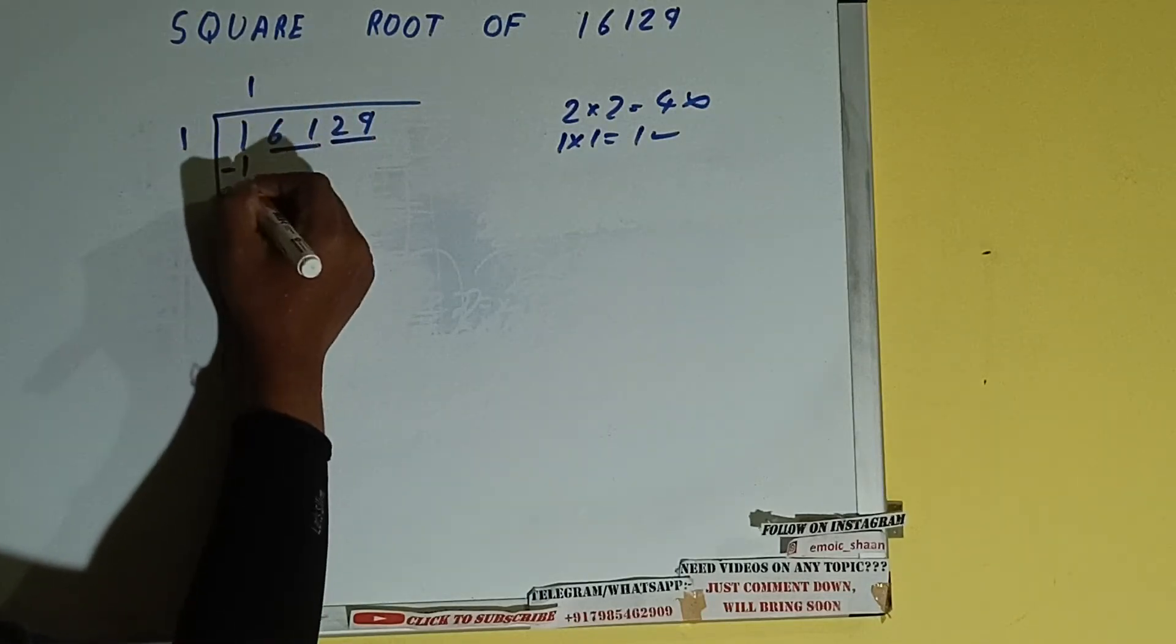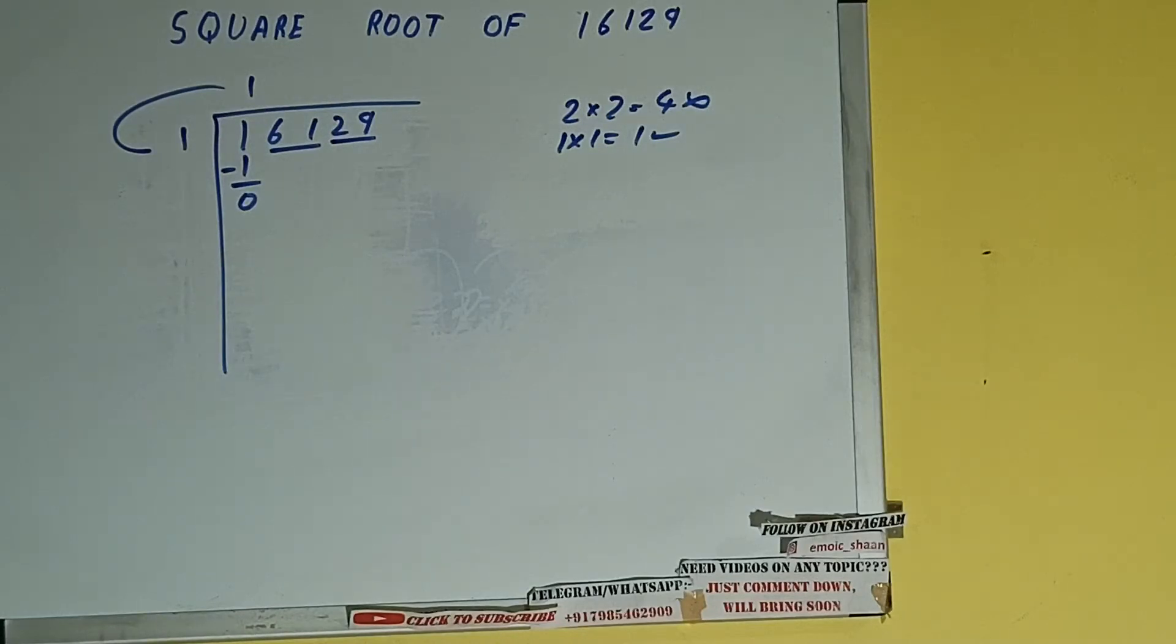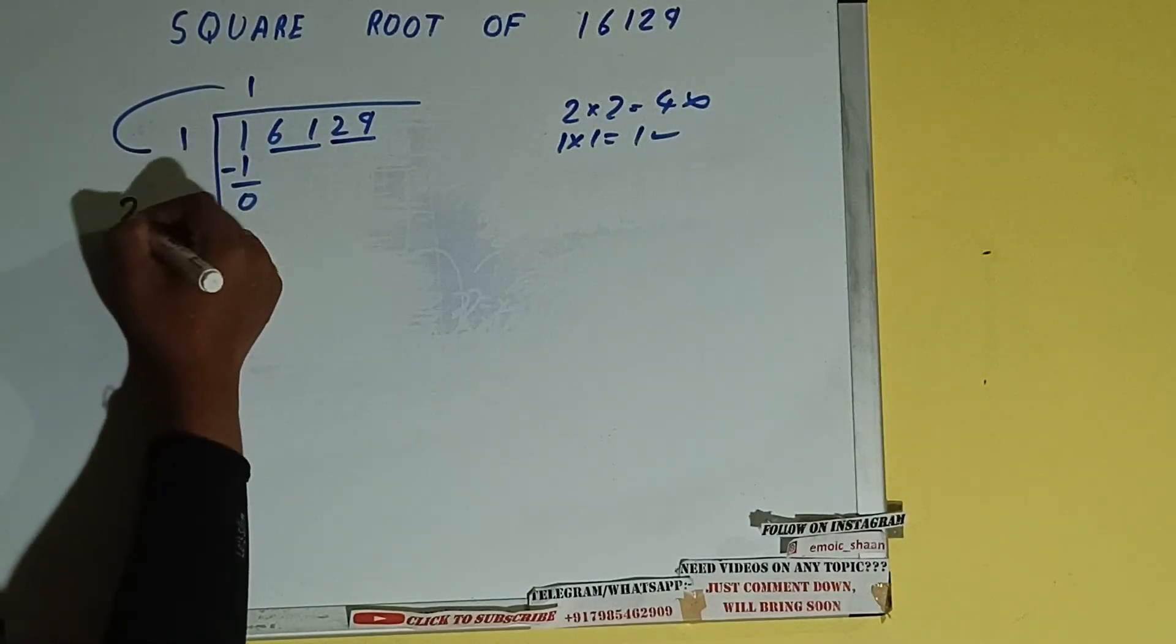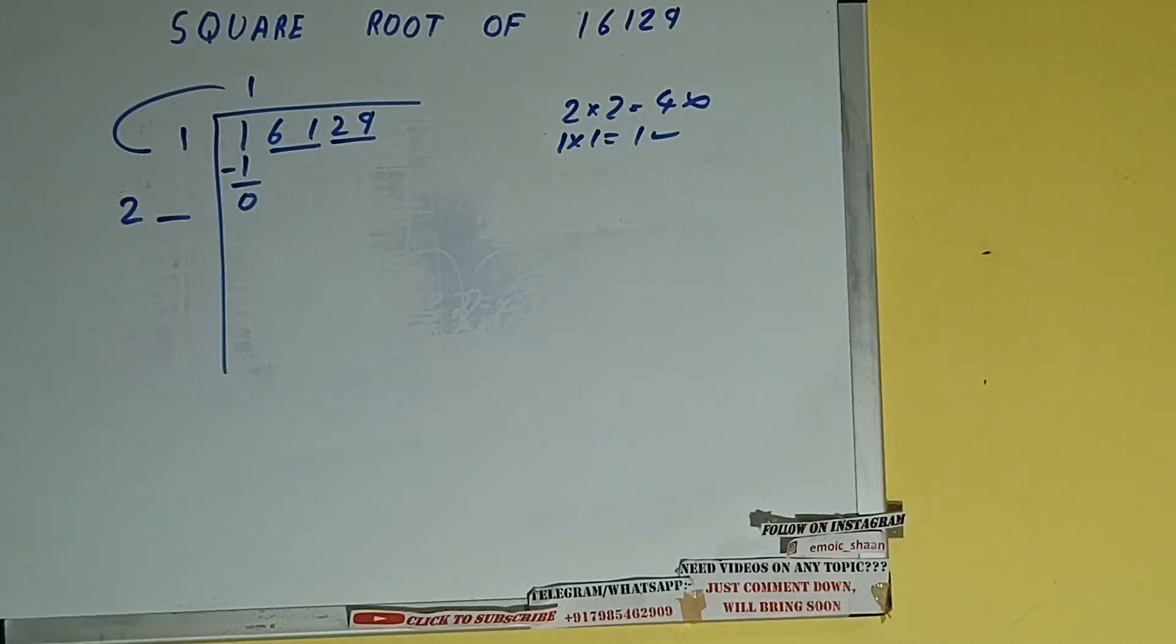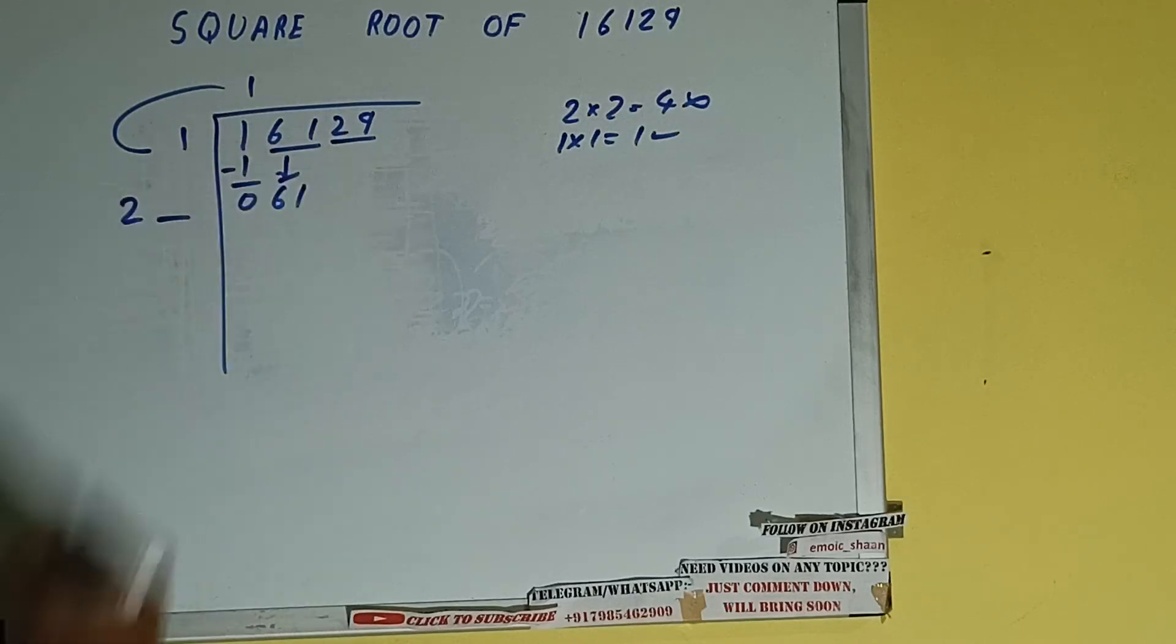We did 1 times 1, so add 4. So 1 plus 1 will be 2, write it here and keep a digit extra. This number we need to make big, so bring the next pair down and it will be 61.